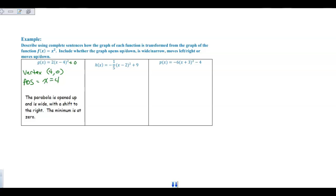So, by looking at the information that comes just from our equation, I was able to determine the vertex is at 4, 0, that the axis of symmetry is where x is 4, the parabola is opening up, and it is wide because 2 is greater than 0, and it has a shift to the right with a minimum at 0.